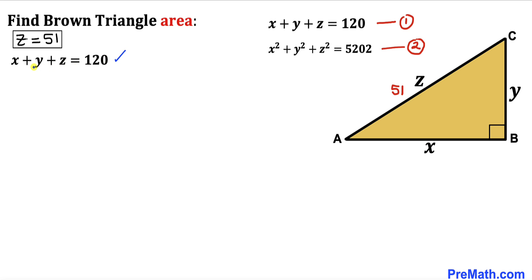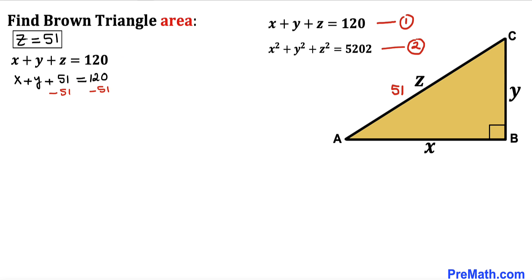Now focusing on equation one: X plus Y plus Z equals 120. We already found Z equals 51, so substituting gives X plus Y plus 51 equals 120. Subtracting 51 from both sides, our X plus Y value turns out to be 69.